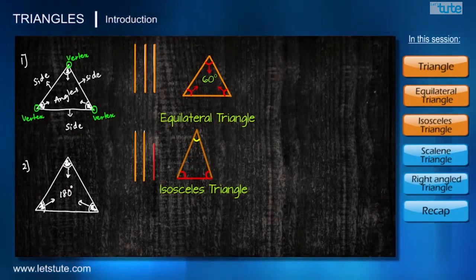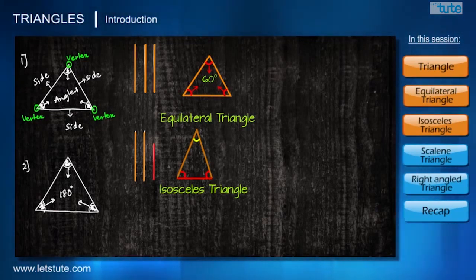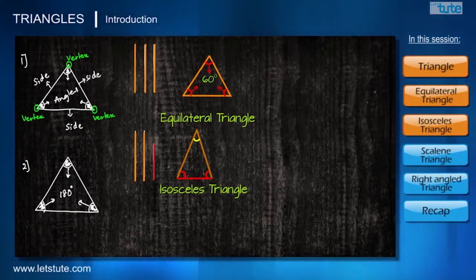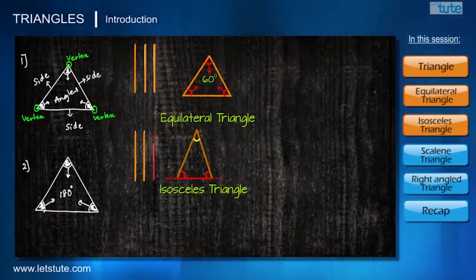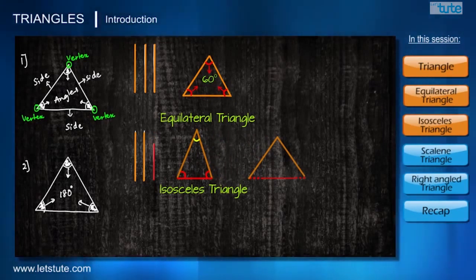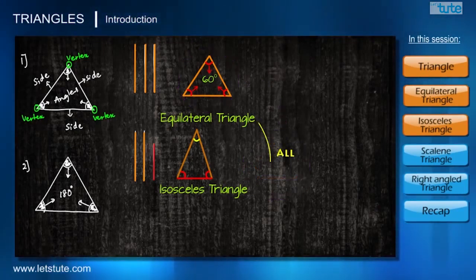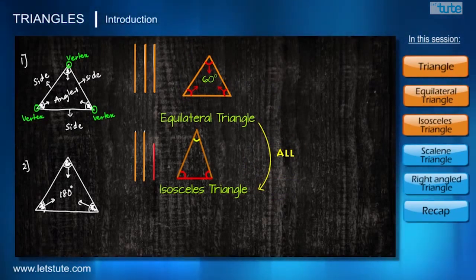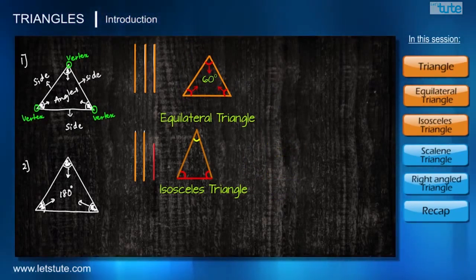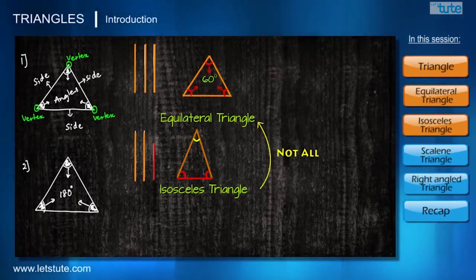We haven't talked about the third side — the unequal side. The third side may or may not be equal to the remaining two sides. If it is not equal, that's fine and it remains isosceles. But if the third side is equal to the remaining two sides, then all three sides become equal and it becomes a case of an equilateral triangle. From this we understand that all equilateral triangles are isosceles triangles, but not all isosceles triangles are equilateral.